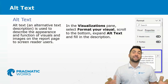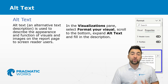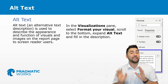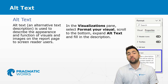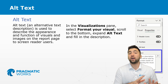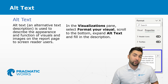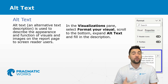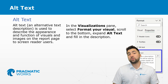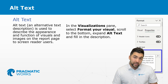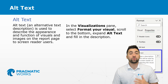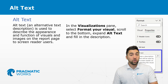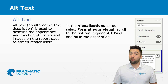Alt text is an alternative text description, and mostly it is going to be used to describe the appearance and function of visuals within your reports. Any images can also have alt text, and if an individual is using a screen reader, they are going to be able to get an additional description from you of what's going on in that particular image or report visual.